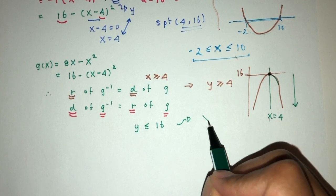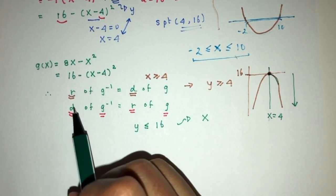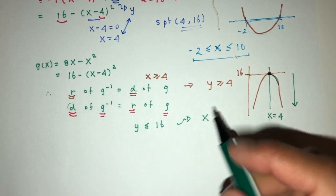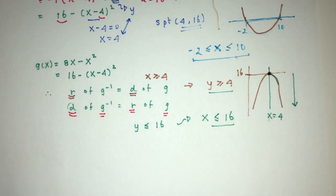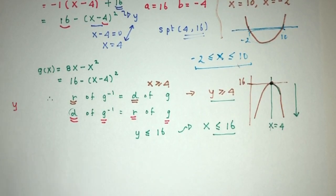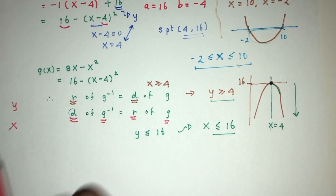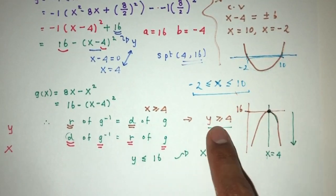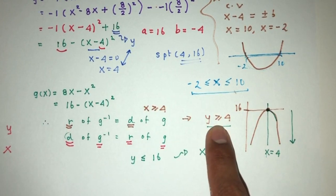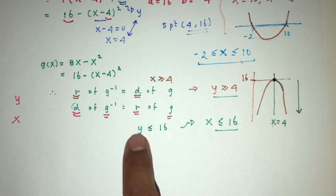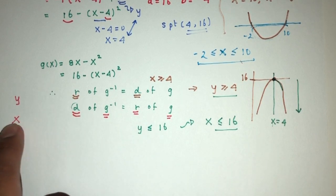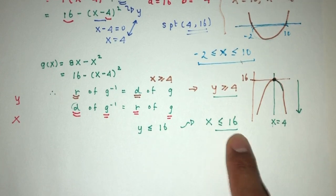From the range of g (y ≤ 16), the domain of g⁻¹ must be in terms of x, so x ≤ 16. To summarize: range is expressed in y values, domain in x values. So the range of g⁻¹ is y ≥ 4, and the domain of g⁻¹ is x ≤ 16.